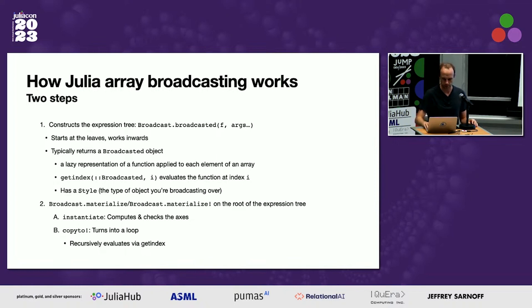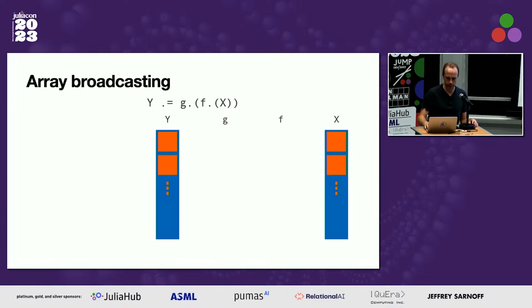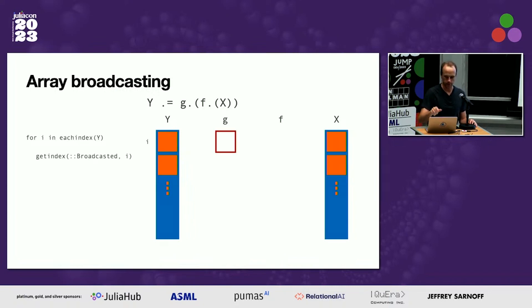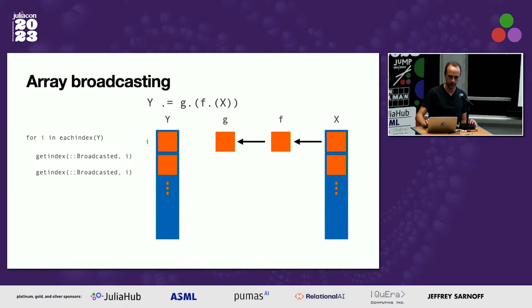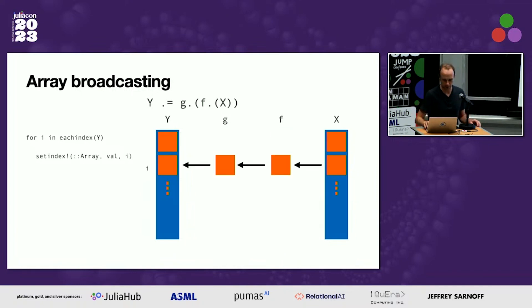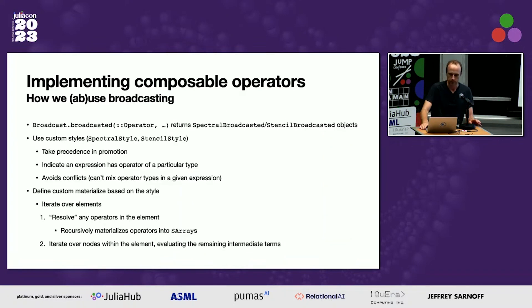What that actually looks like: if you have an expression like g(f(x)), it essentially turns into a for loop over each index. It calls getindex on the broadcasted of g, which recursively calls broadcasted again, which then calls getindex on the actual array, evaluates f, evaluates g, and stores it in y. This is how broadcasting works — it moves on to the next element.